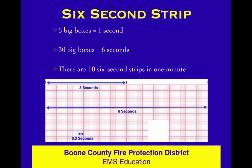Here's the six-second strip — that's 30 big boxes. The cool thing is that there are marks at the top of the EKG paper, as you can see, and they are three seconds apart. So if you get two of those marks, you have a six-second strip. Simply count the number of QRS complexes you see in that six-second strip, multiply by 10, and you've got the patient's heart rate. Pretty cool.